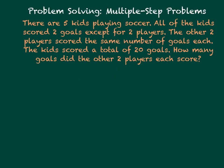There are five kids playing soccer. All of the kids scored two goals except for two players. The other two players scored the same number of goals each. The kids scored a total of 20 goals. How many goals did the other two players each score?